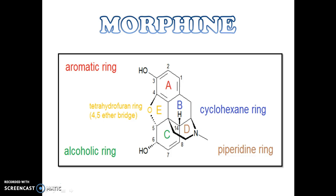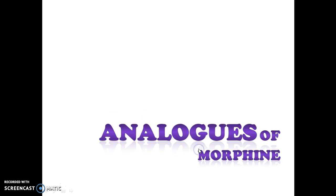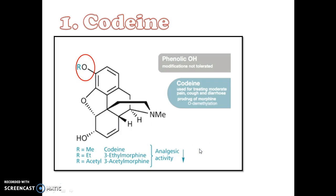This slide shows the structure of morphine. I would like to emphasize the five rings here. A ring is an aromatic ring, B is a cyclohexane ring, C is an alcoholic ring because of one hydroxy group here, D is a piperidine ring — a six-membered ring which has a nitrogen atom — and finally E ring is a tetrahydrofuran or O5-ether bridge.